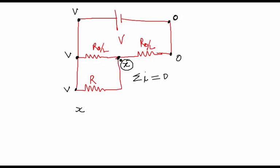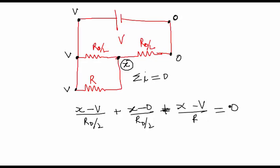The current flowing in this direction can be written as X minus V upon R0 by 2, plus current flowing in this direction X minus 0 upon R0 by 2, equals current flowing in this direction plus X minus V upon R. So the net current flowing, addition of all, should be equal to zero.